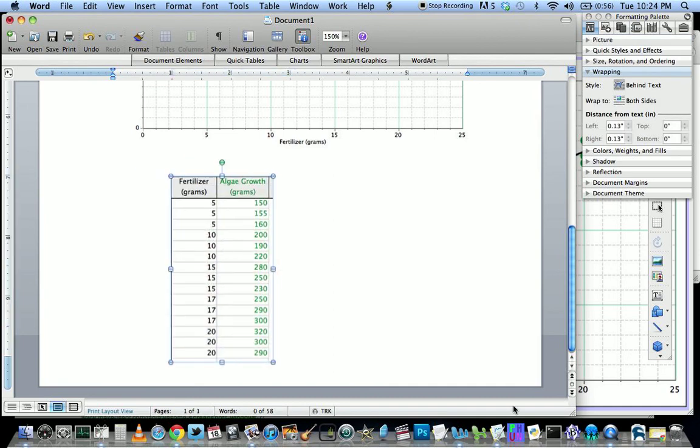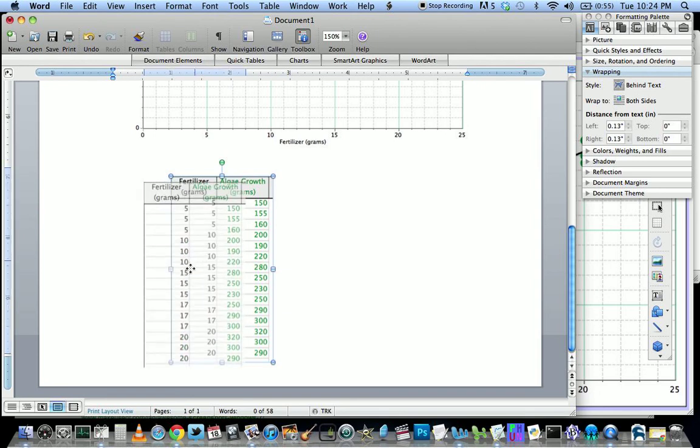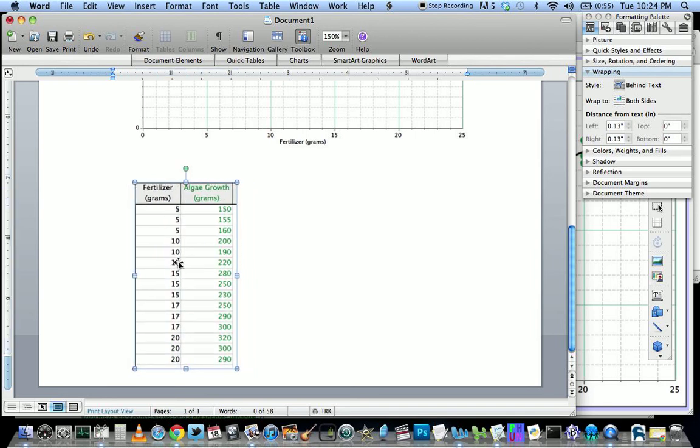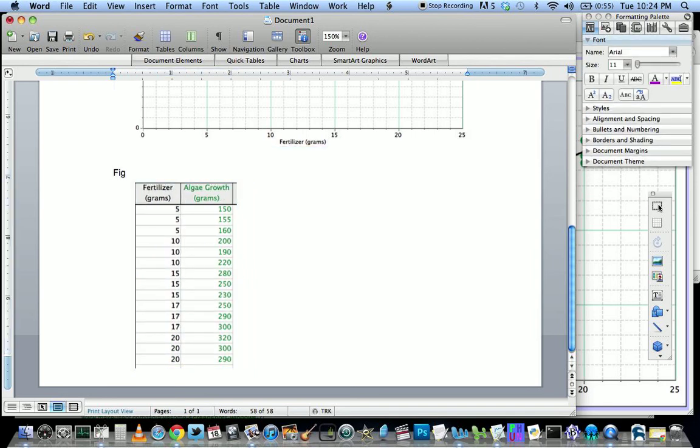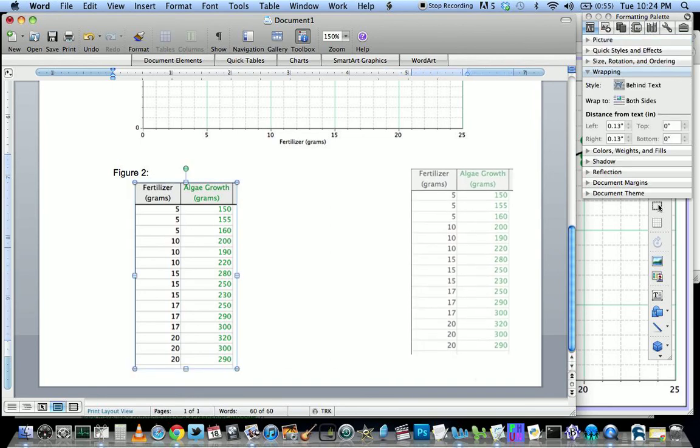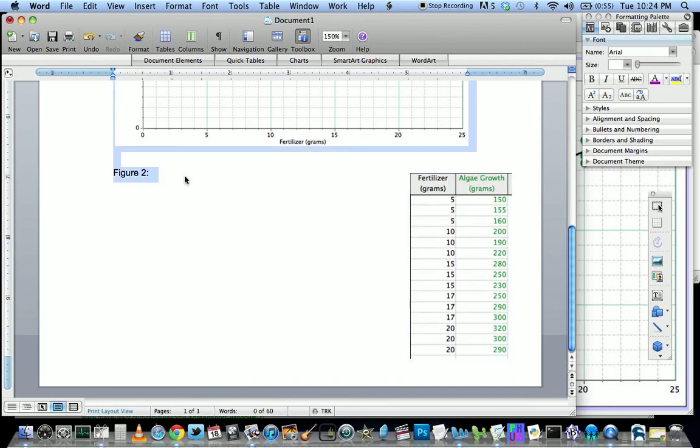So then that's how I got the graph in there too, but you may need to figure out a different way on your operating system. This data table also needs a figure number. So I'm going to call this figure two and I'm going to give it a short description. So this might say, this data table shows the data collected during the experiment.